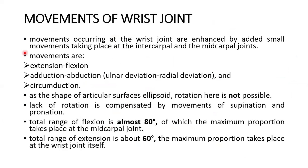Movements at the wrist joint are enhanced by added small movements taking place at the intercarpal and midcarpal joints. Movements are: extension, flexion, adduction, abduction, ulnar deviation, radial deviation, and circumduction. As the shape of articular surfaces is ellipsoid, rotation is not possible — this is compensated by supination and pronation. Total range of flexion is almost 80 degrees, of which the maximum proportion takes place at the midcarpal joint. Total range of extension is about 60 degrees, with the maximum proportion taking place at the wrist joint itself.